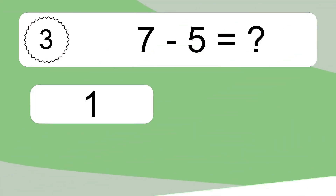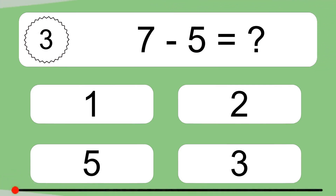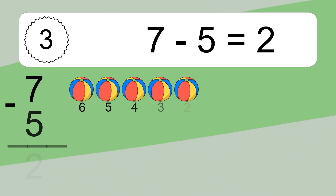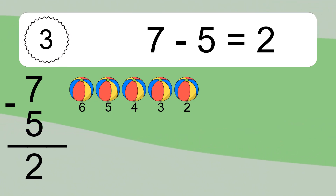7 minus 5 equals what? 7 minus 5 equals 2. Let's count it: 6, 5, 4, 3, 2.